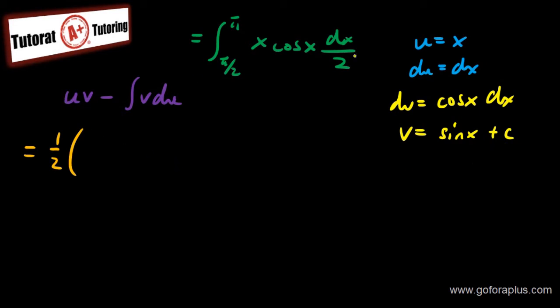So what's uv? u is x, v is sine of x. So I have x sine of x, subtract integral of v, which is sine of x, and du is dx. So I have sine of x dx. All this is from pi over 2 to pi. I don't have the plus c, because I have the boundary.